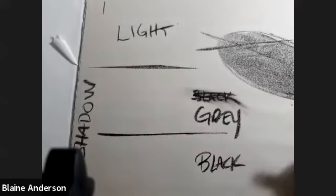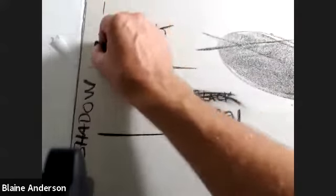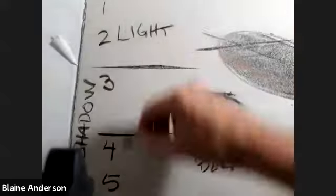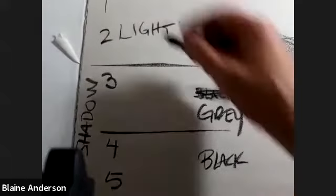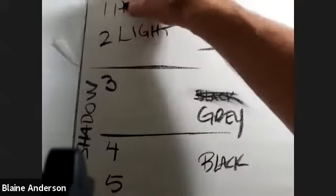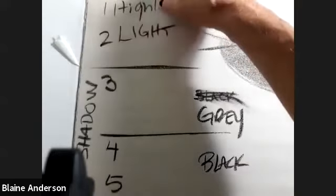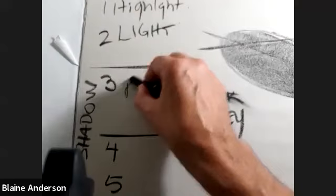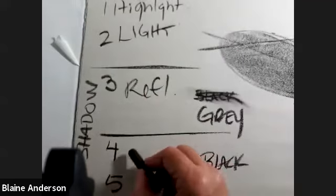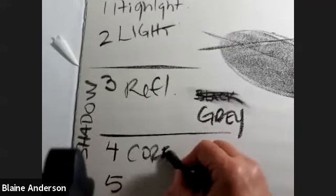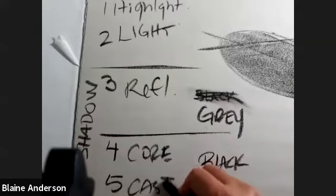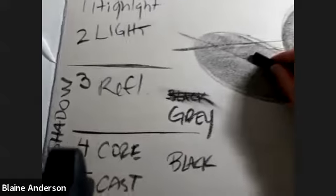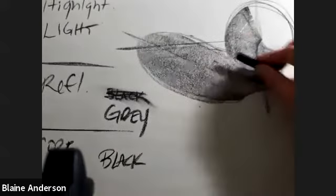So where am I going to put black? Because I said I have five degrees of light and shadow. What's lighter than light is highlight. This is my reflected light. This is my core and this is my cast. Right now I'm not differentiating between core and cast — I'm going to make both of them black. So in my drawing here, this is my cast.